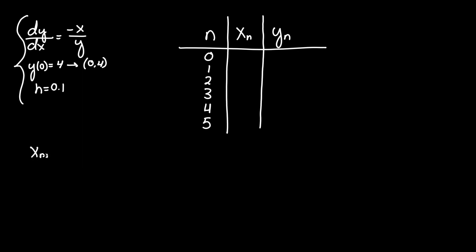Where x of n plus one equals x of n, so the previous iteration, plus h or the step size of 0.1. That's it. However for y of n plus one, that one equals the previous value of y.